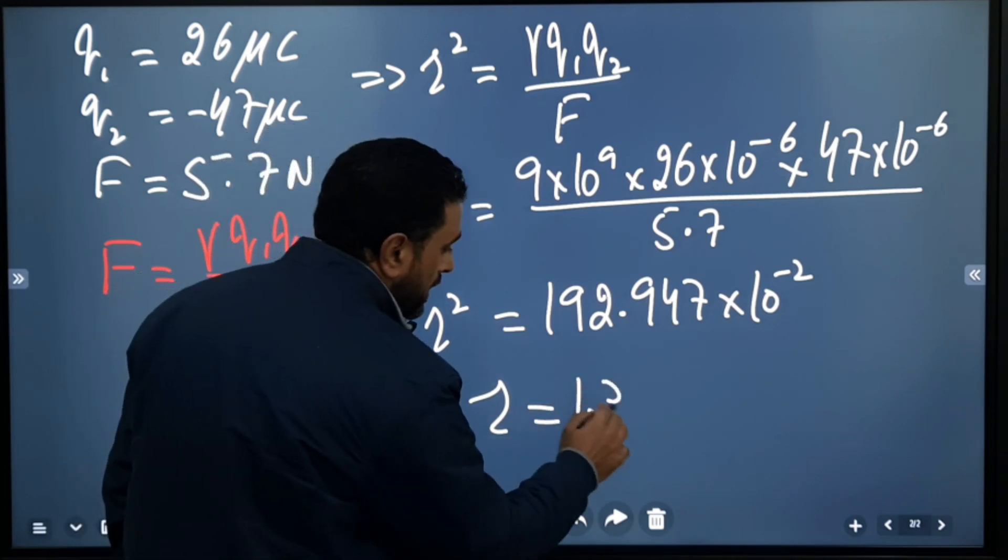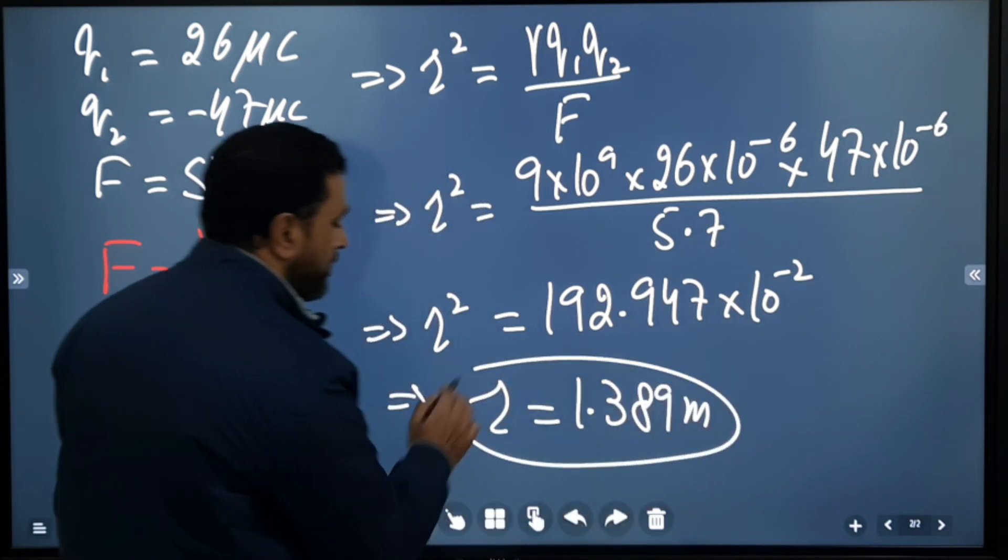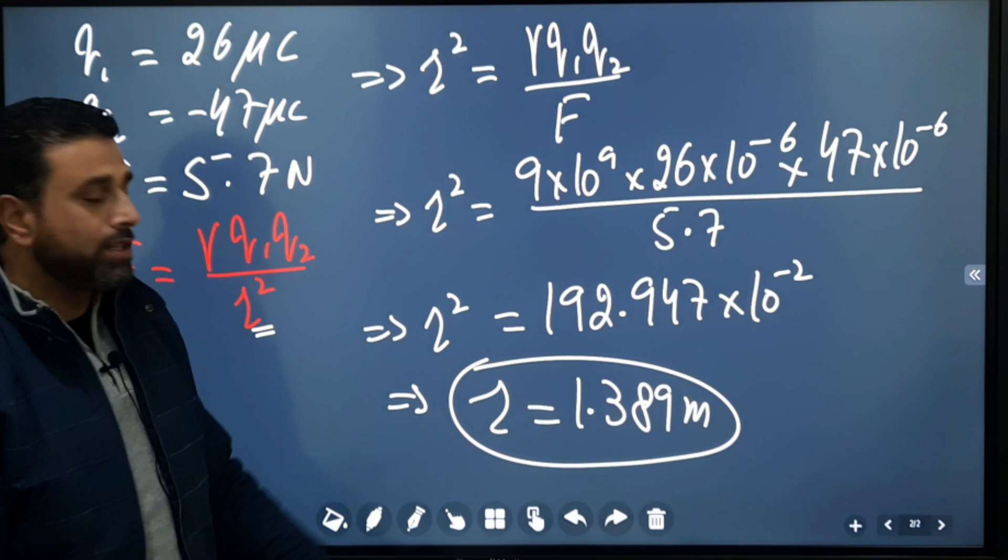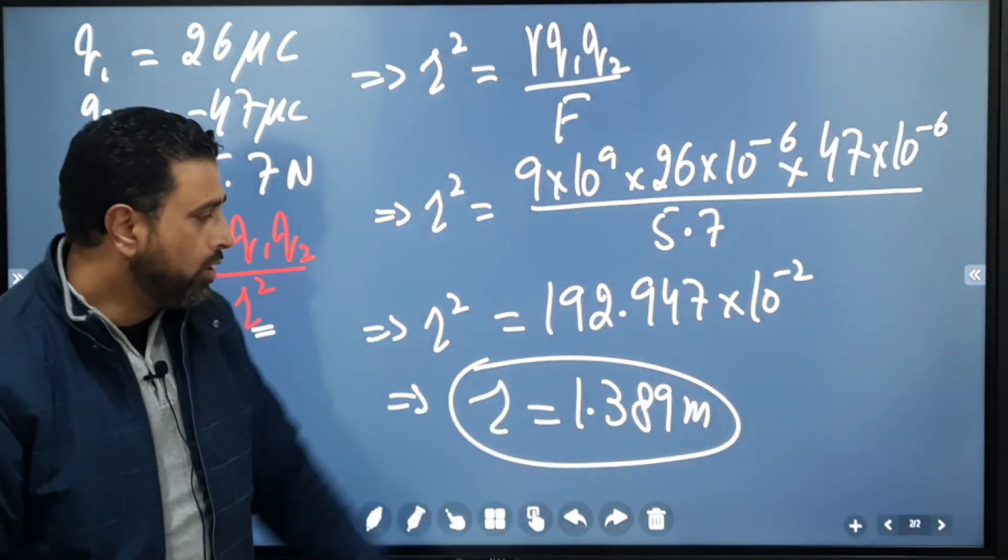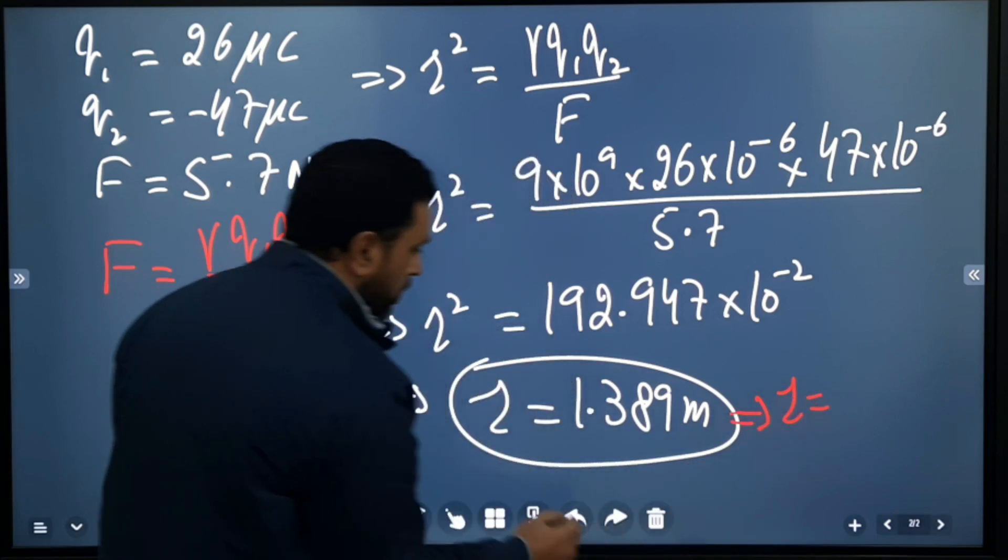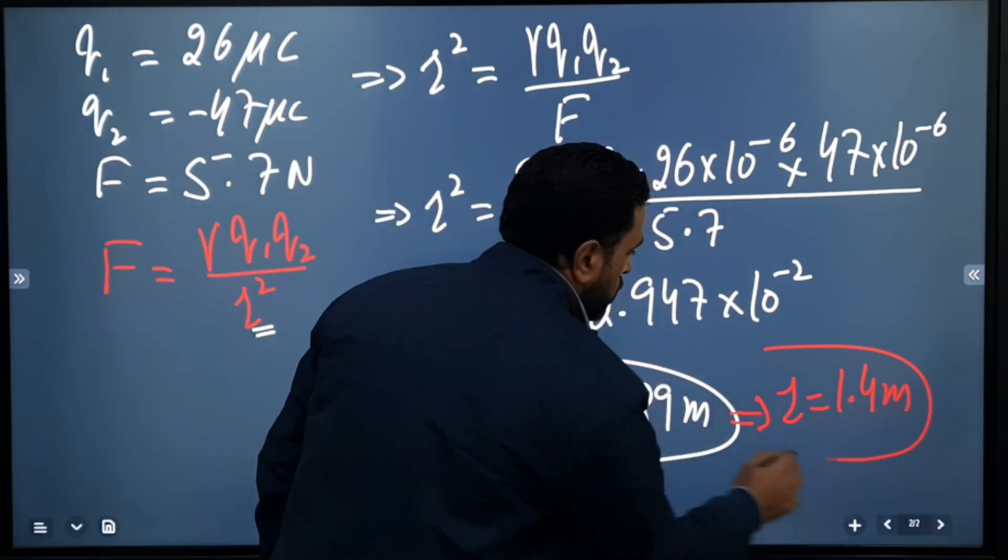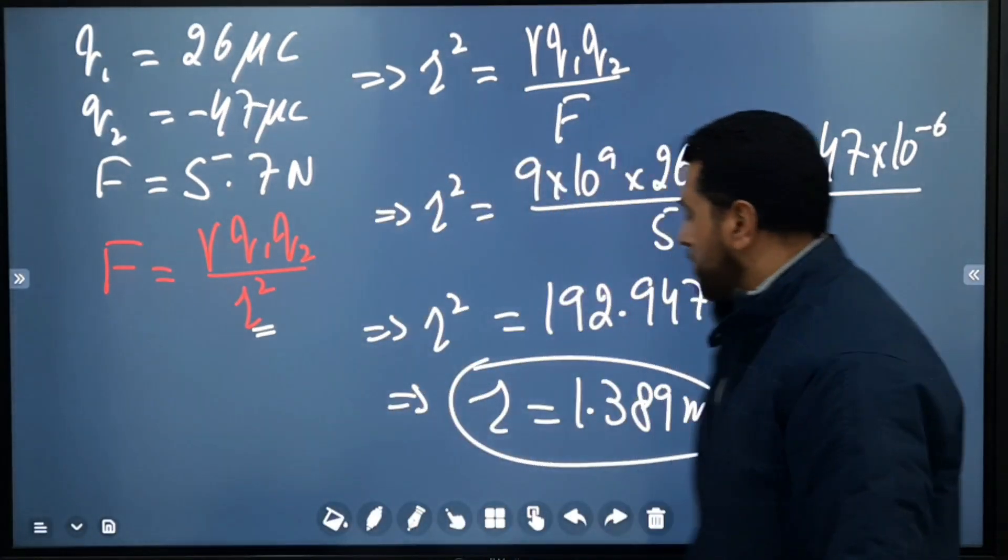In SI system, so meters. Everything was in SI system, so distance r will also be in SI system, meters. So approximately r equals 1.4 meters. The two charges are separated by a distance of 1.4 meters.